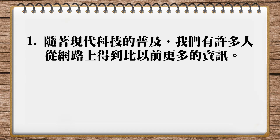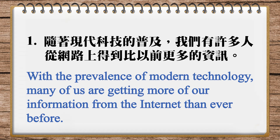然後偶然是透過網路，那只是一個background detail, it's not that important. The point is that we're getting lots more information than we ever got before. And I'll read it one more time: with the rapid spread of modern technology, lots of people now have access to much more information than before via the internet. Now listen to the one in the magazine: with the prevalence of modern technology, many of us are getting more of our information from the internet than ever before. So what this is saying is that in the past, we didn't get so much information from the internet — we got it from other sources — but now, 那個比例不一樣，它的總量可能是一樣的，可是從internet得到的那個比例可能變多了. So those are two different things.